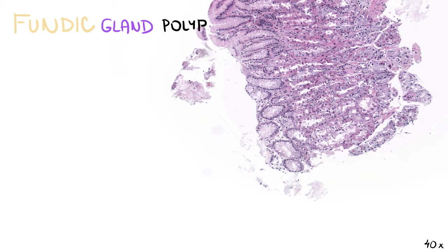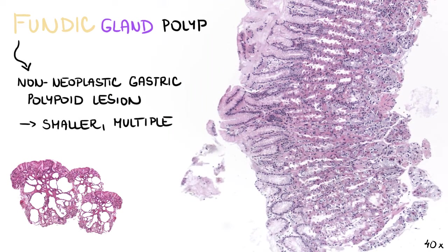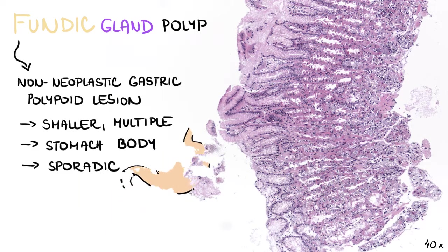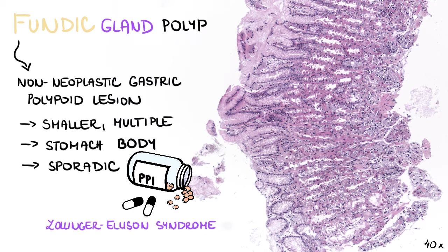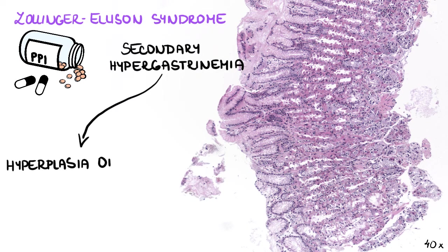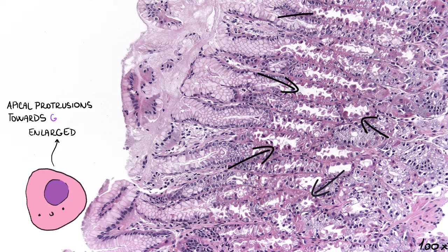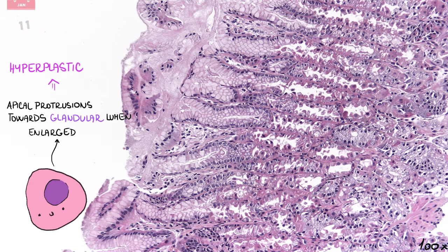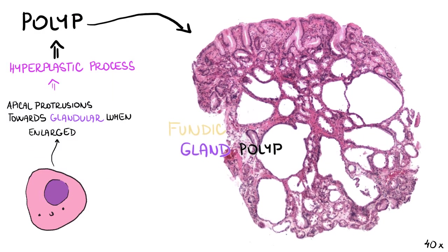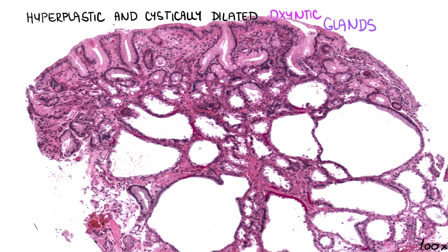A fundic gland polyp is another common representative of non-neoplastic gastric polypoid lesions. It is usually smaller and multiple, localized in the stomach body. It is usually sporadic, occurring as a consequence of long-term use of proton pump inhibitors or in patients with Zollinger-Ellison syndrome. These patients share a common denominator in secondary hypergastrinemia, leading to hyperplasia of the glandular zone of the stomach body with predominance of parietal cells. These cells are enlarged and form typical apical protrusions towards the glandular lumen, and over time this hyperplastic process leads to formation of multiple small polyps consisting of hyperplastic and cystically dilated oxyntic glands.